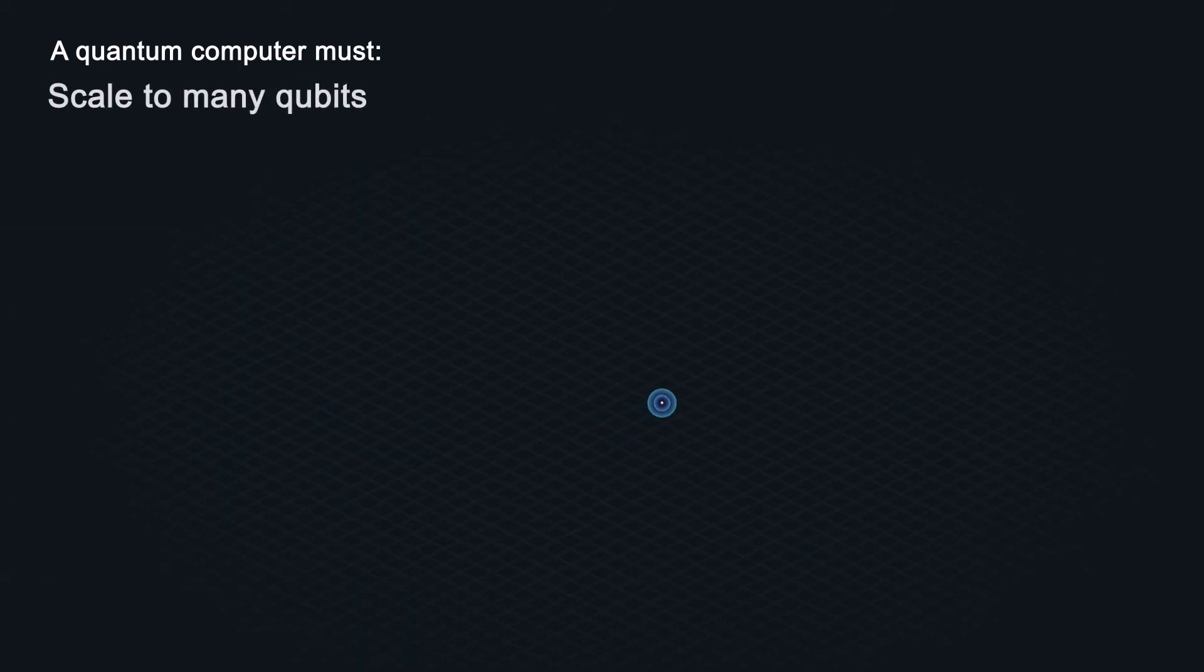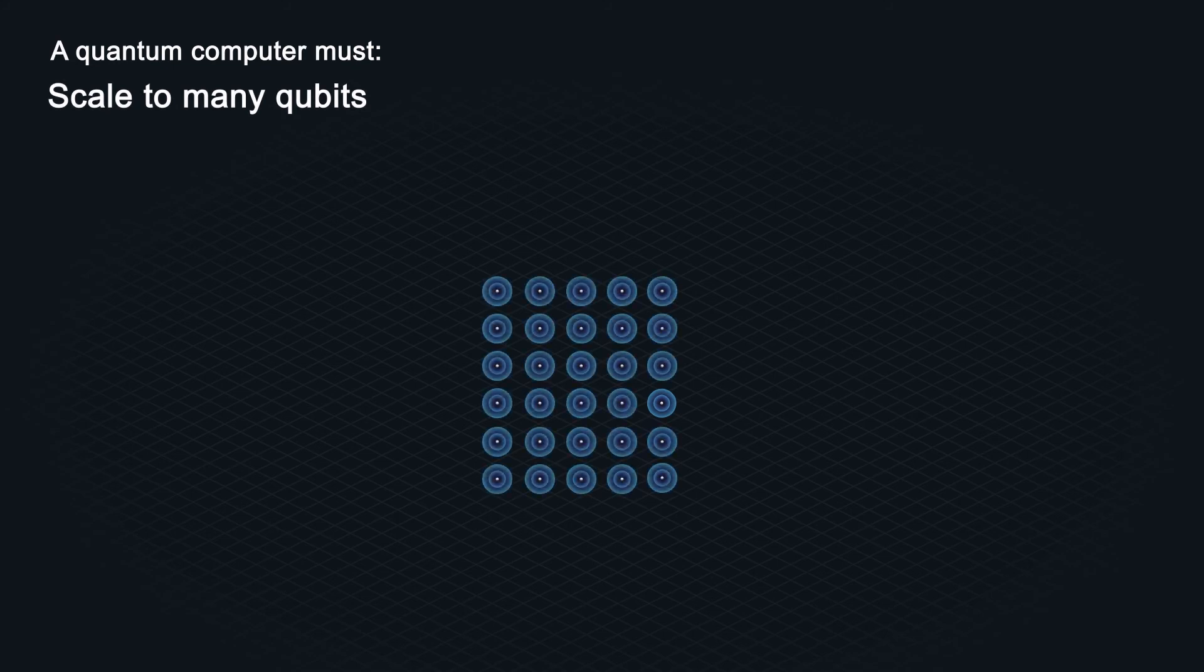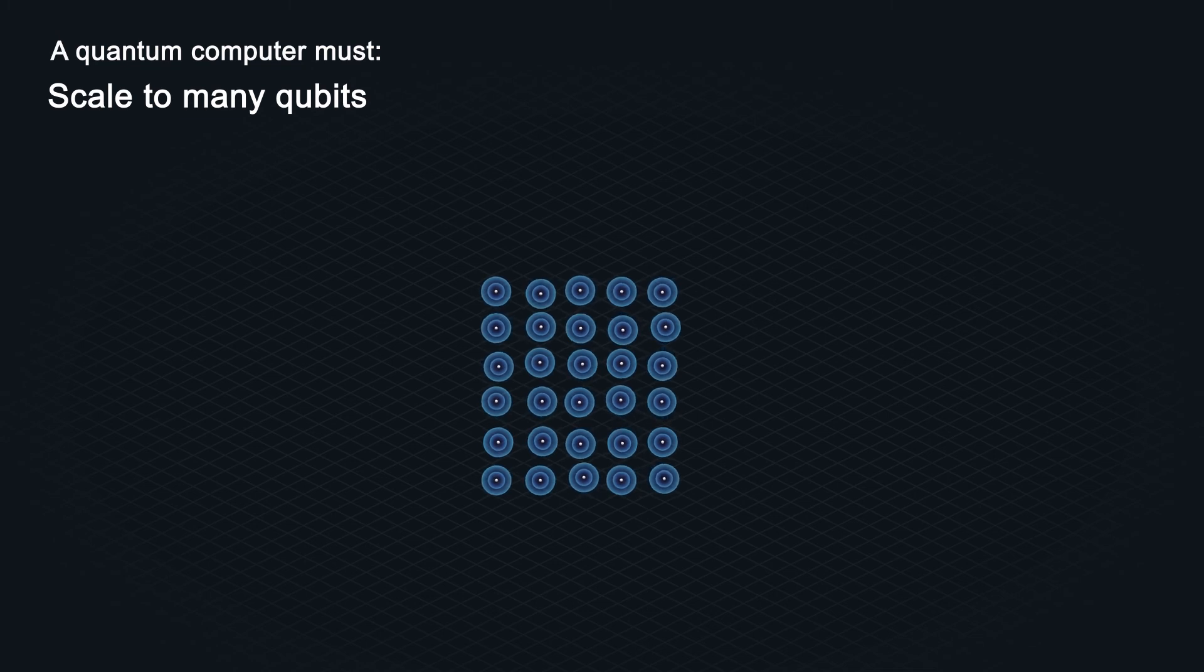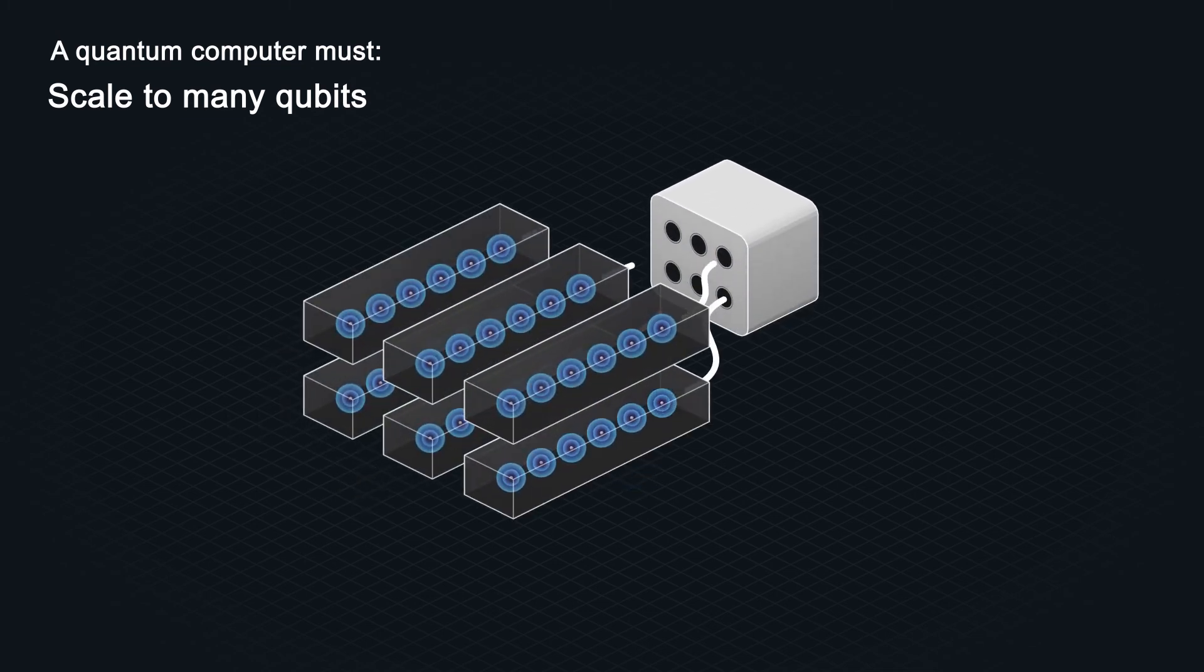Because many qubits are needed, quantum devices must be designed to be scalable. Researchers can only cram so many ions next to each other in a single ion trap before they get too unruly. But with modules, each containing tens or hundreds of ions, they can start to wire up a large-scale quantum computer.